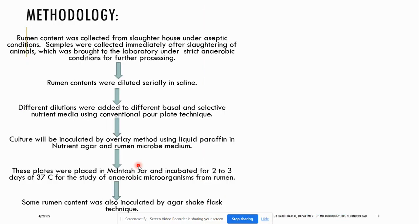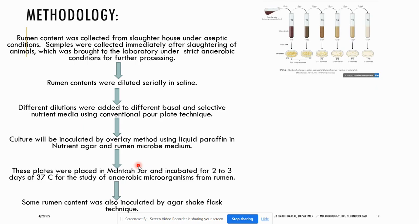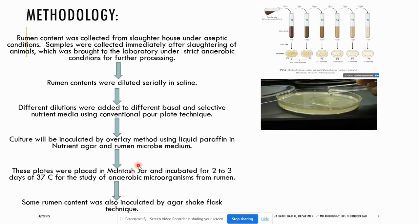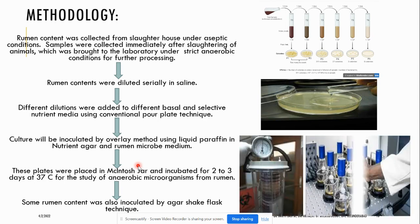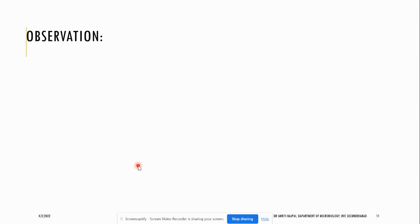For the methodology, we will first collect rumen fluid from the slaughterhouse, take the sample, and serially dilute it. Once serial dilution is done, we will culture the organisms on specific media using the overlay method with liquid paraffin in nutrient agar and rumen microbe media. These plates are placed in the McIntosh jar for 2 to 3 days at 37°C. After plating, some rumen content is also inoculated using the agar shake flask technique.